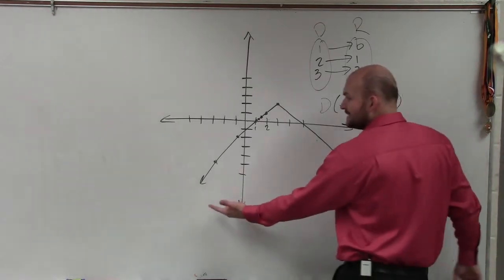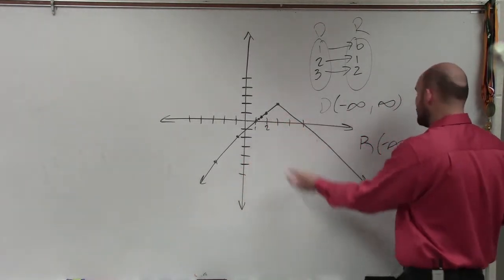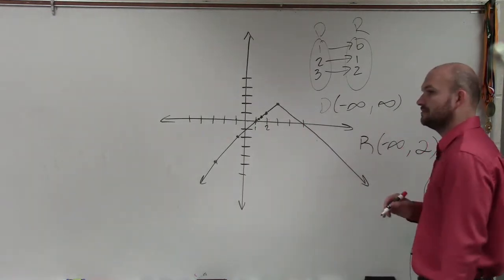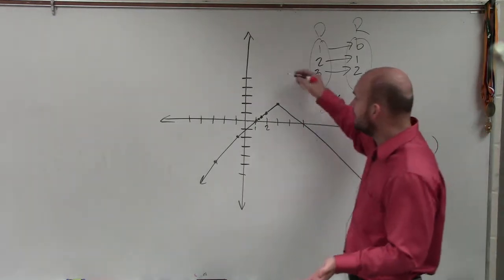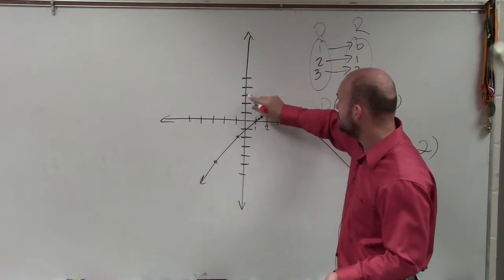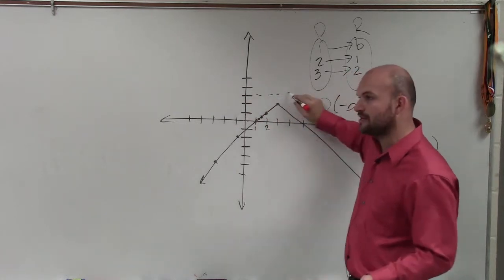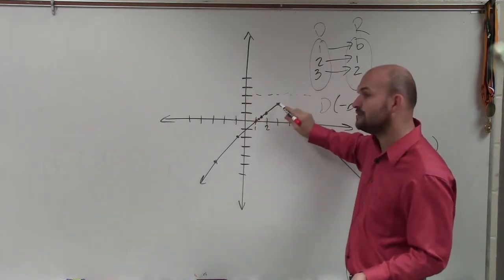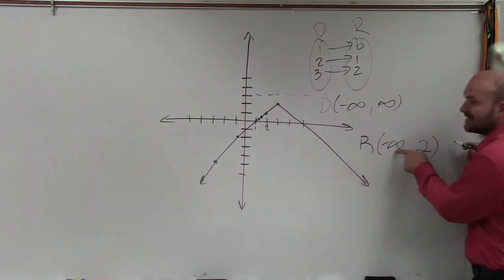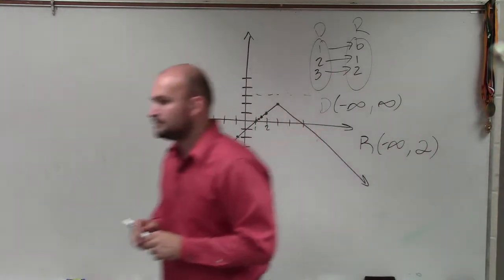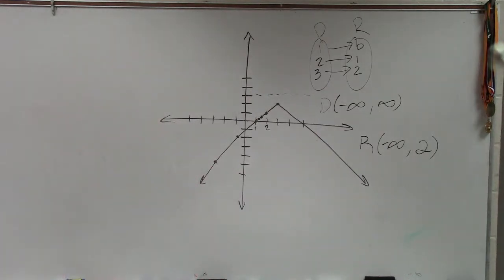But how high does my graph go? 2. So the y, if you see like, is y equal 3? No. There's no y value at 3, right? The highest y value is at 2. So that's why my range is from negative infinity to 2. OK? So now I want you guys to determine your domain range for those.